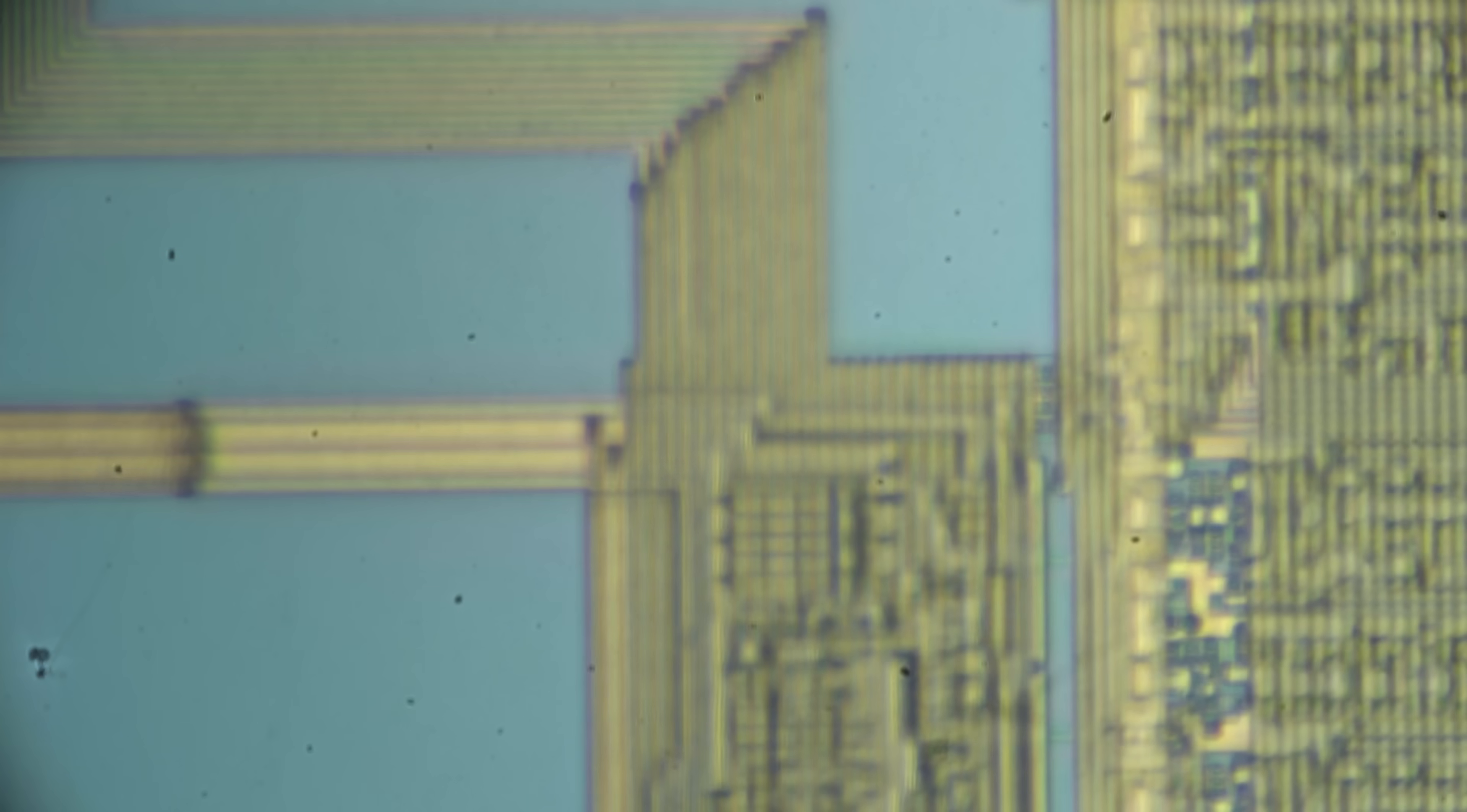We can use a different instrument, an atomic force microscope, to understand how tall these aluminum interconnects really are. This instrument scans a tiny probe across the surface, collecting height information which can be converted into a three-dimensional model.